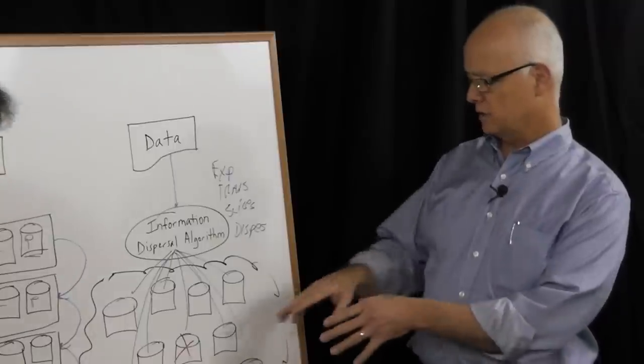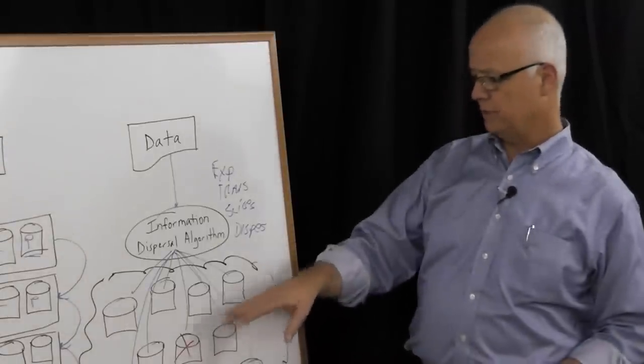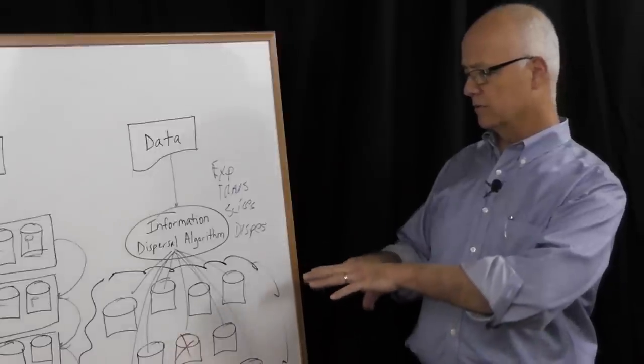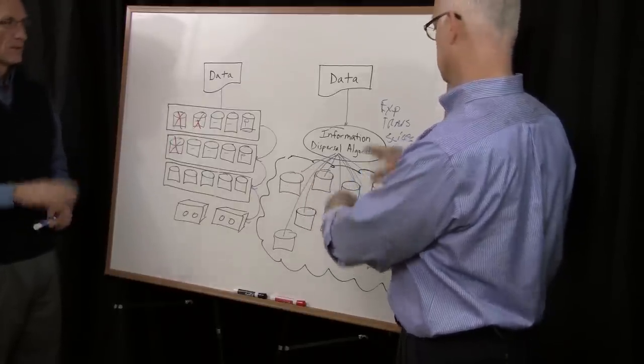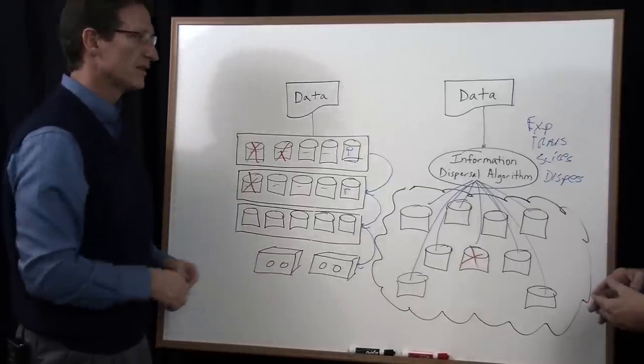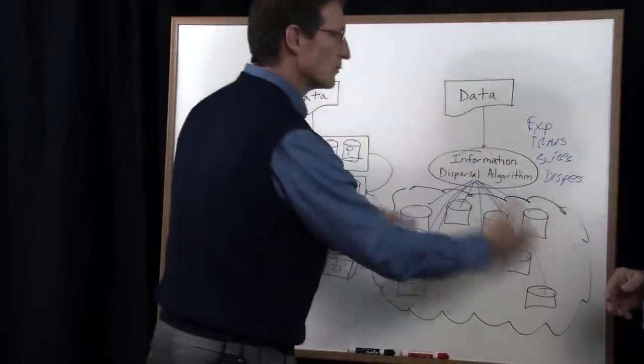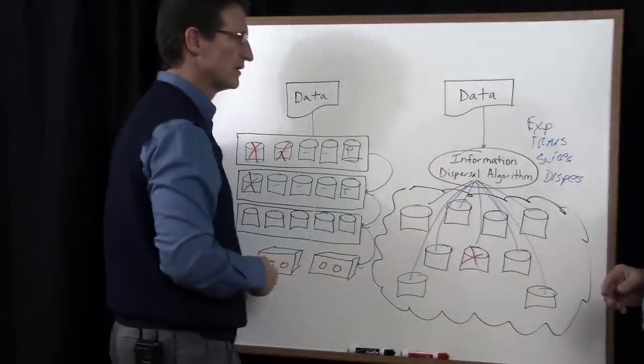So you say you don't have to have that one specific piece. Are you saying then that reliability levels are related to the number of redundant chunks or pieces that you have? So it's not redundancy, it's slicing and dispersing of the data. Let me explain it differently.